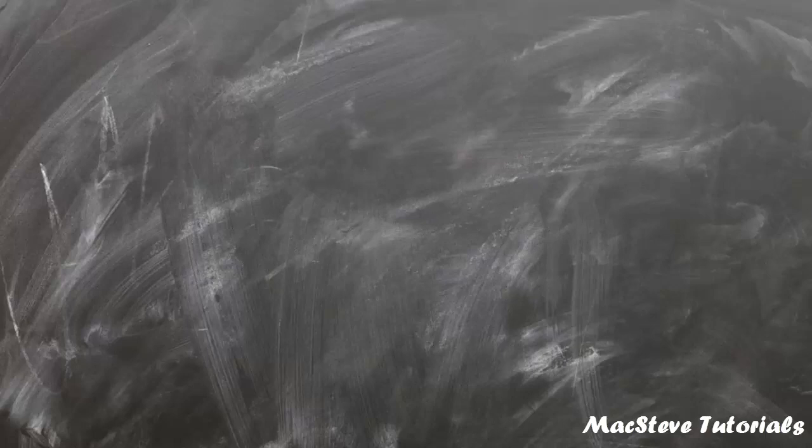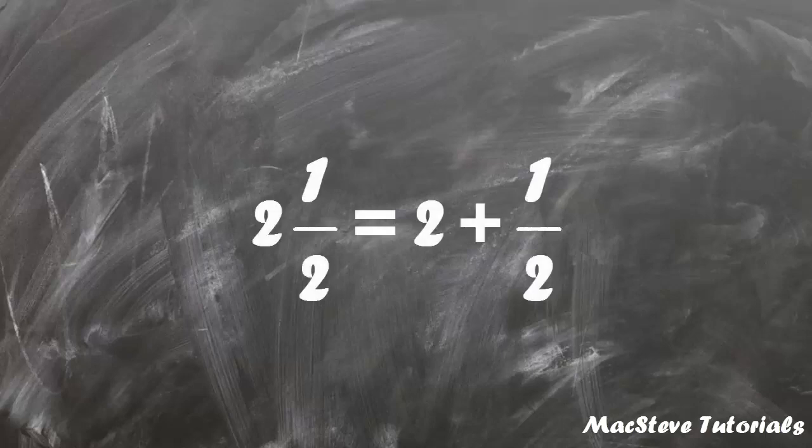A common mistake that students make very often is to think that mixed numbers represent the product between an integer and proper fraction. Well it's not, it's a sum. For example, 2 and 1 half is the same as 2 plus 1 half.